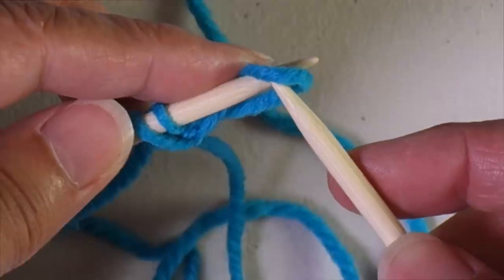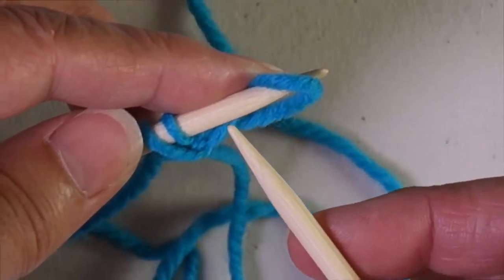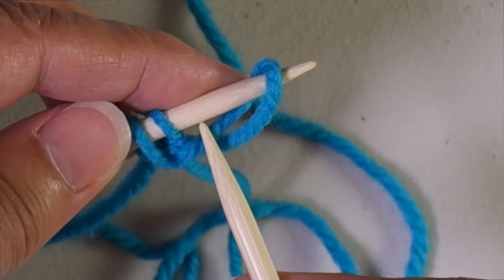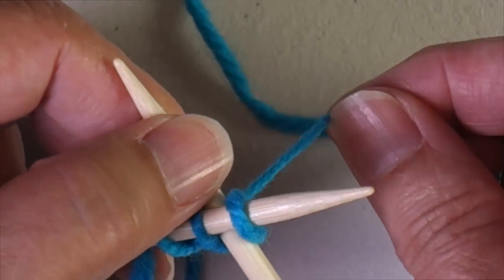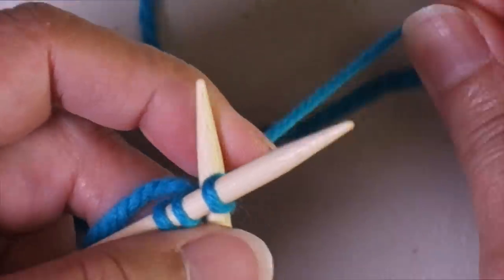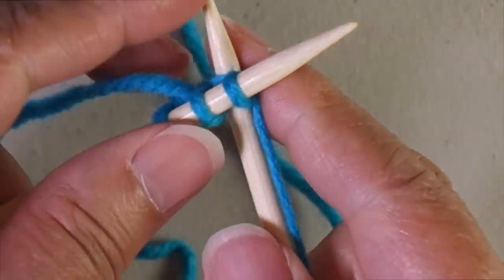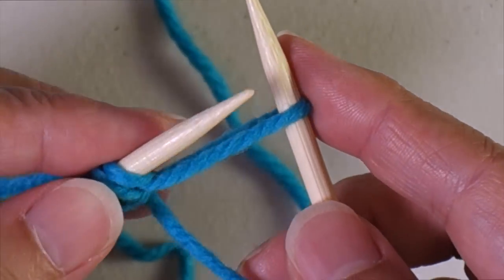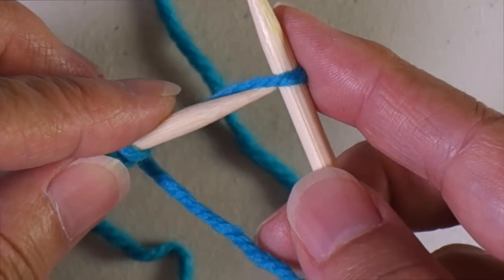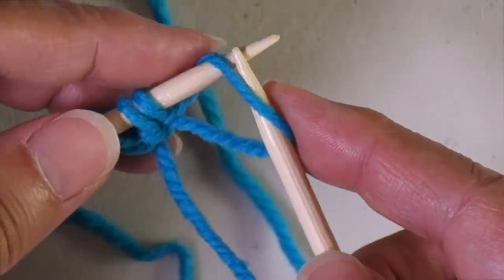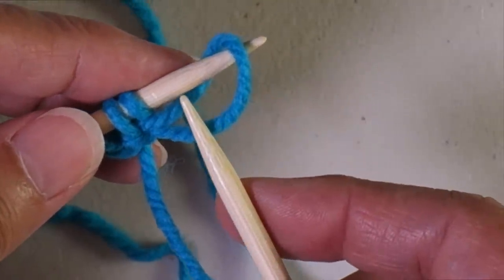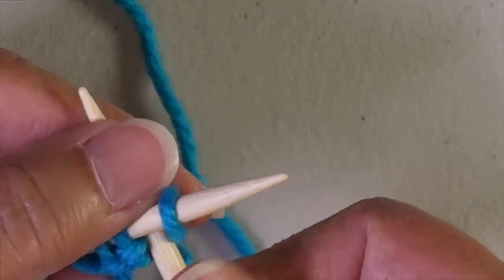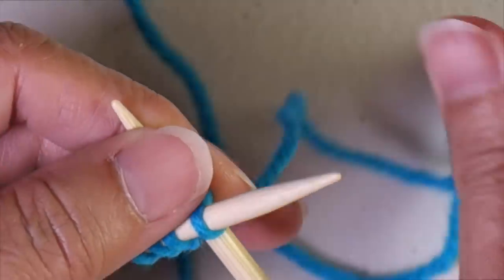Then I need to pull the working needle out. I do not tighten this loop up yet. I insert it between the two stitches and then I tighten that loop. Pull it through. Let the left needle cross in front. Then as I pull my working needle out, I reinsert it between the two stitches and then I tighten it up.